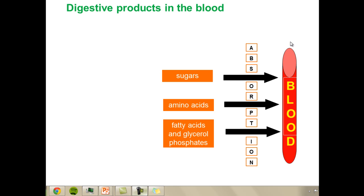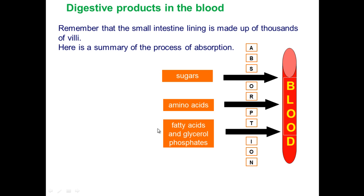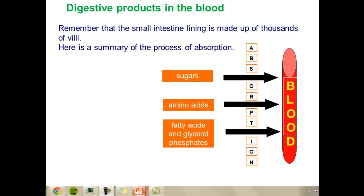Here we have a summary of the whole process of absorption. The villus is one cell thick; inside is the small intestine, and outside is the bloodstream. Once sugars, proteins and lipids are broken up into their monomers they are more easily absorbed into the bloodstream, where they'll be transported to the liver for assimilation — where they're rearranged into more useful products. For sugars that would be glycogen; for amino acids, different types of proteins such as keratin and collagen.